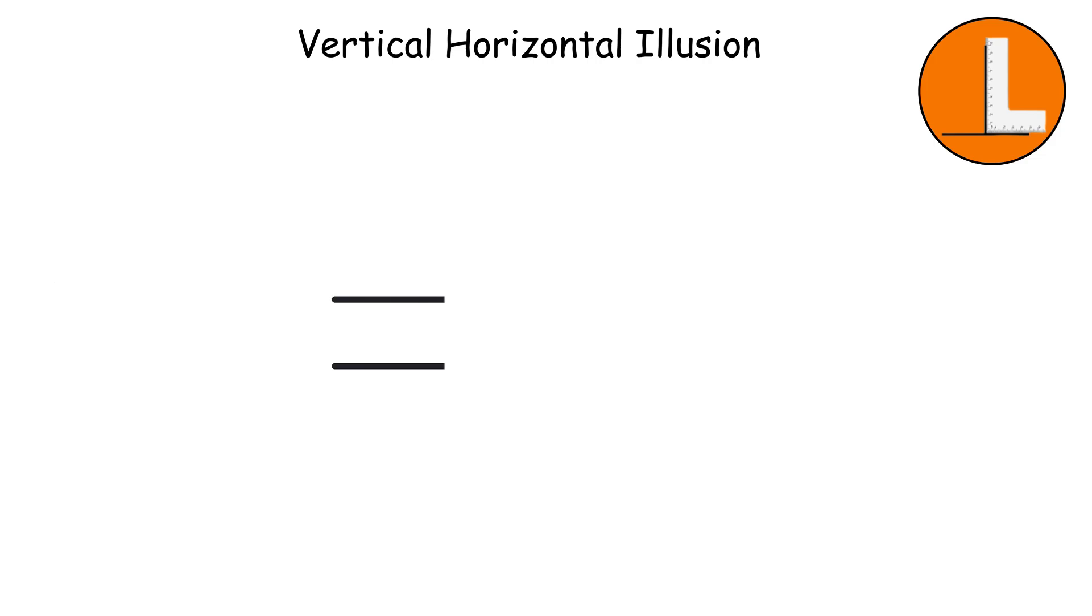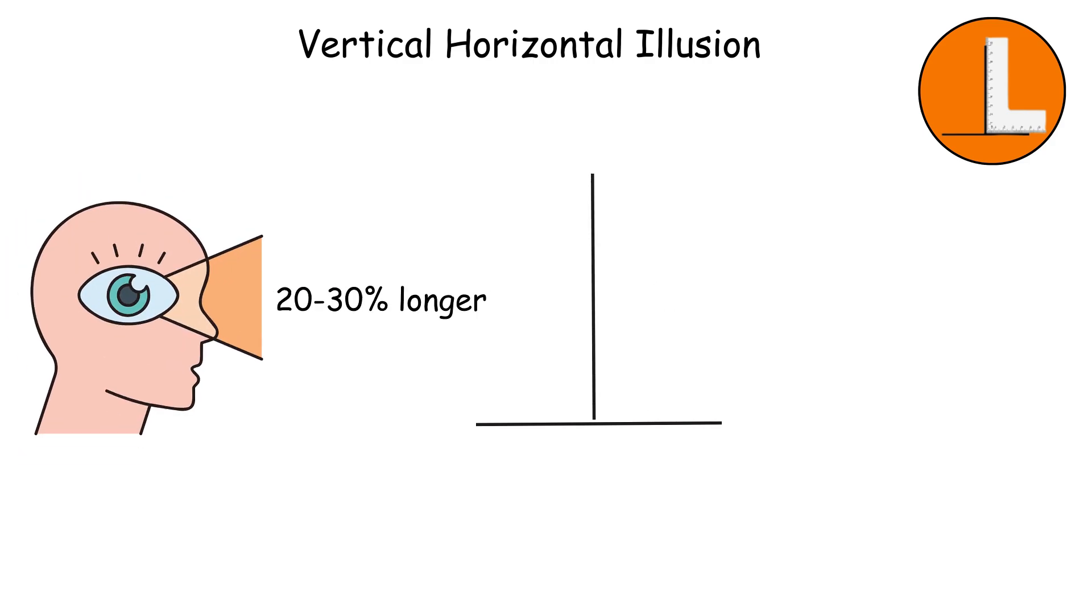In this illusion, you've got two lines of identical length, one vertical and one horizontal, often arranged in an upside-down T-shape or a plus sign. Your eyes look at this setup and immediately think the vertical line is longer, sometimes by as much as 20-30% longer in your perception.